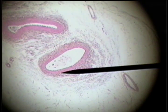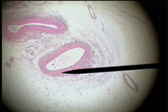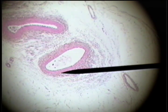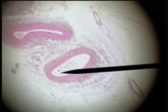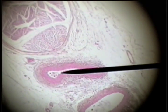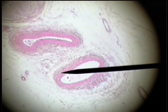Dense, regular, elastic connective tissue can be found in the wall of blood vessels. This is an artery here. This is a vein here.